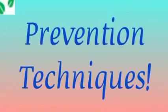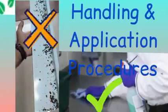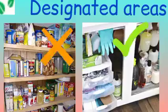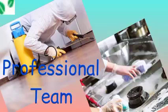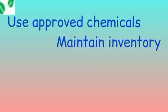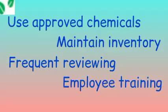Now how can this be prevented? Establishing an effective chemical control program in your facility can reduce or eliminate chemical hazards in food. Train employees to follow safe handling and application procedures for sanitization, maintenance, or pesticide chemicals. Store chemicals in designated areas away from food ingredients, packaging and food contact surfaces. Pest control should be performed by professionals, and chemical residues in incoming food products should be controlled.